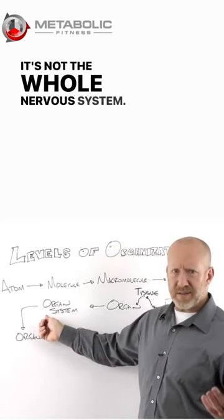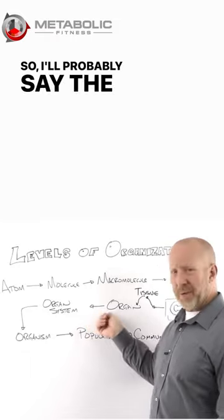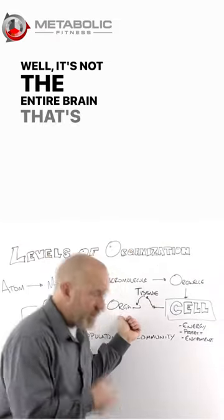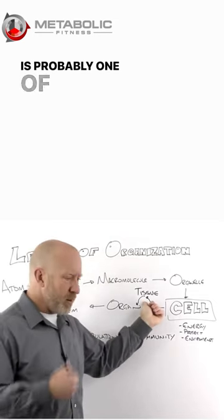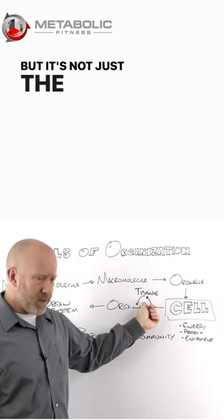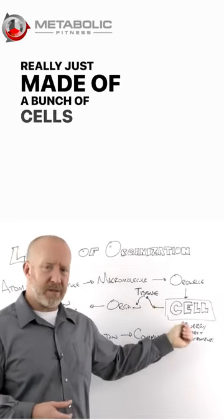But the nervous system, it's not the whole nervous system, it's probably just part of it. So I'll probably say the brain, which is an organ. Well, it's not the entire brain that's having a problem. It's probably one of the different tissues inside of the brain. But it's not just the whole tissue, because the tissue's really just made up of a bunch of cells.